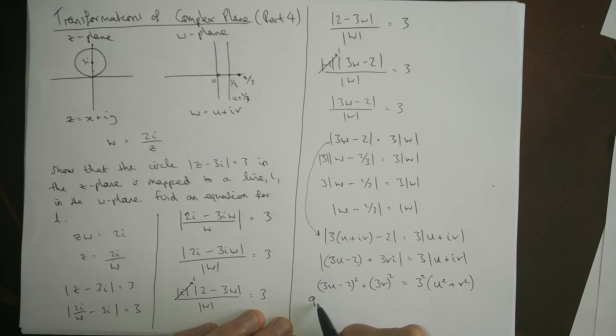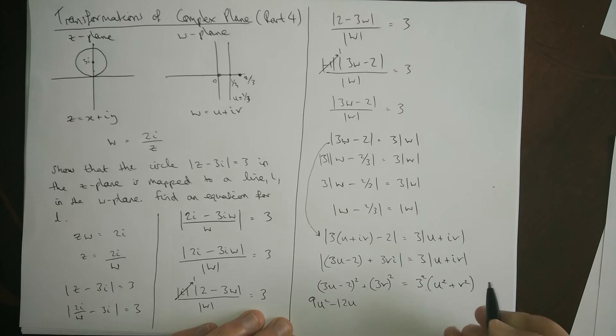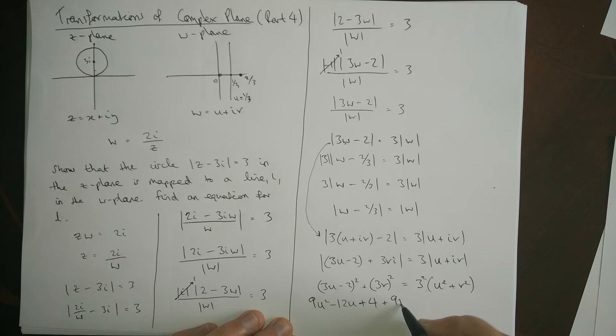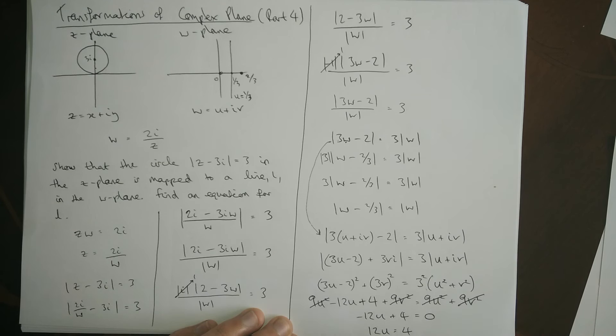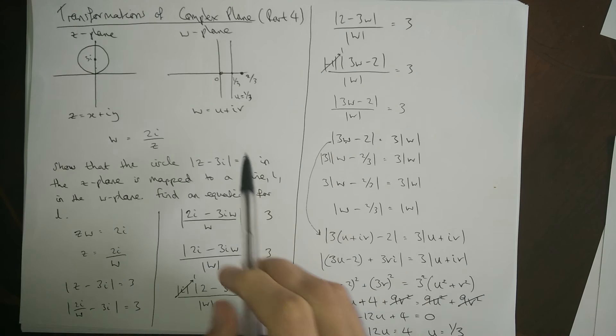Now, expand this out. So, we get 9u squared. 3 times minus 2 is minus 6. Doubled is minus 12. And then we have 4. And then here we've got plus 9v squared. Over here we've got a 9u squared and a 9v squared. And look, the 9v squared cancels out and the 9u squared cancels out. And we're left with minus 12u plus 4 equals 0. Or better written as 12u equals 4. Or even better written as u equals a third. Oh, just as we had got up here.